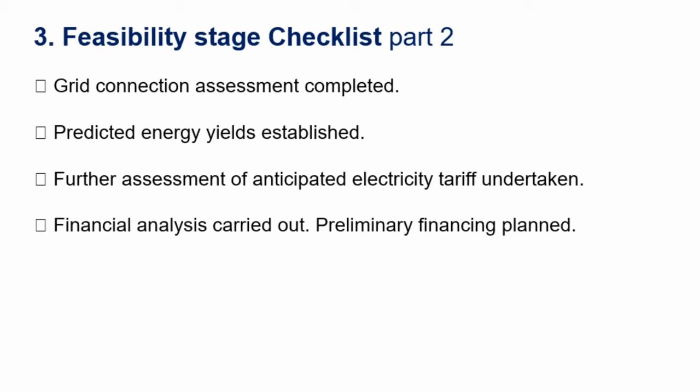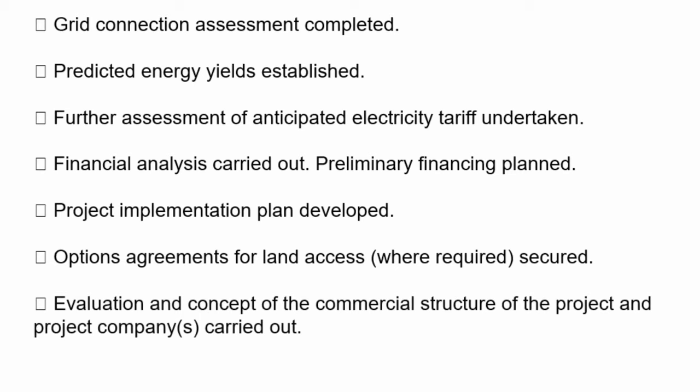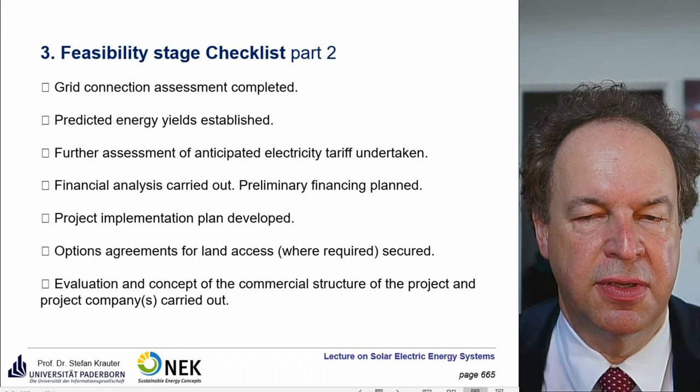A financial analysis is carried out, preliminary financing planned. The project implementation plan is developed — what are the timeframes, how long does each task take, with some reserves. Options agreement for land access: you need access not only to the land where the power plant sits, but also to carry out maintenance and repairs — so if you sell the land later, you still need to ensure you have access. Evaluation and concept of the commercial structure of the project and project companies are carried out — as mentioned, this is done through a special purpose vehicle.